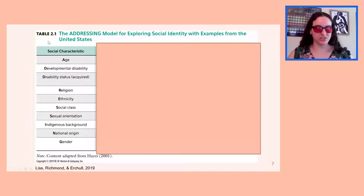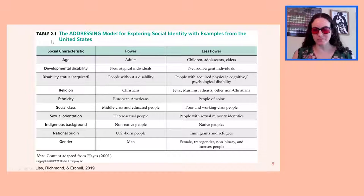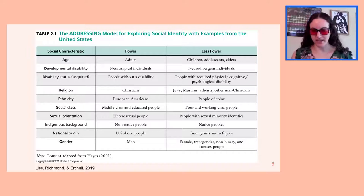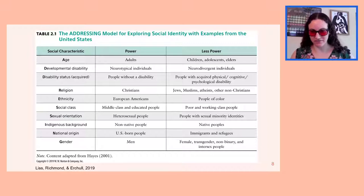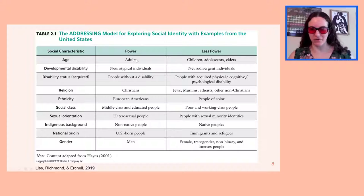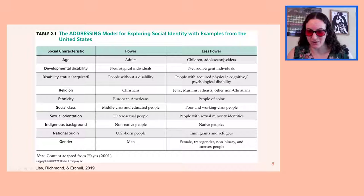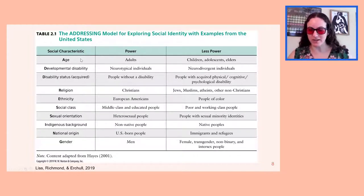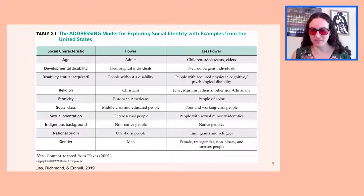When we talk about these social identities within the United States, we have to talk about who has power and who has less power. Starting with age — may we all be lucky enough to live a long life. Adults have power, but children, adolescents, and elders typically have less power. This is one of the only social characteristics where everybody fluctuates, should we live long enough, between power and less power.